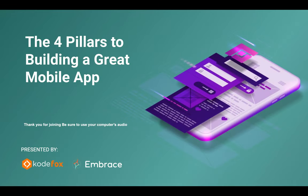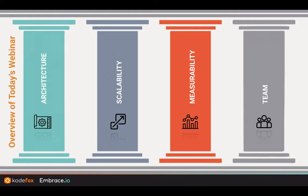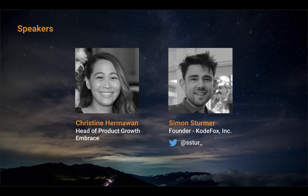Good morning, good afternoon everyone, and thank you for joining us today. My name is Anton, and I'll be moderating the webinar. In today's webinar, we'll be covering the four pillars of making a great mobile app: architecture, scalability, measurability, and team dynamics. With that, I wanted to introduce our speakers today, Christine and Simon.